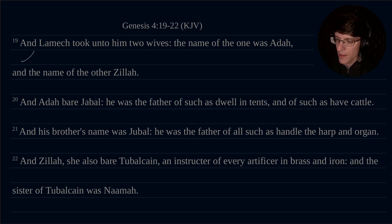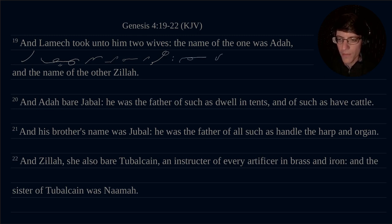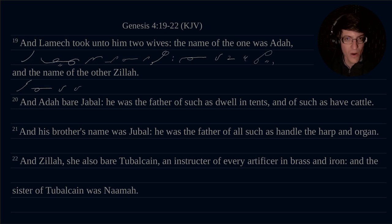And Lamech took unto him two wives. The name of the one was Adah. And the name of the other, Zillah. Notice those are the same strokes — 'of the' and 'of' and 'other' are the same.